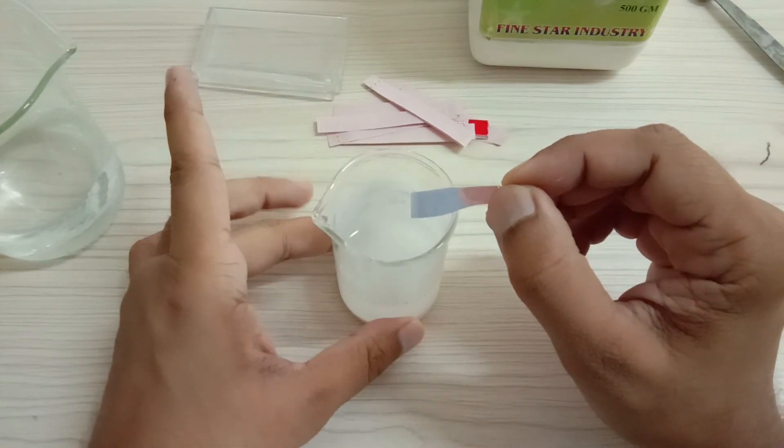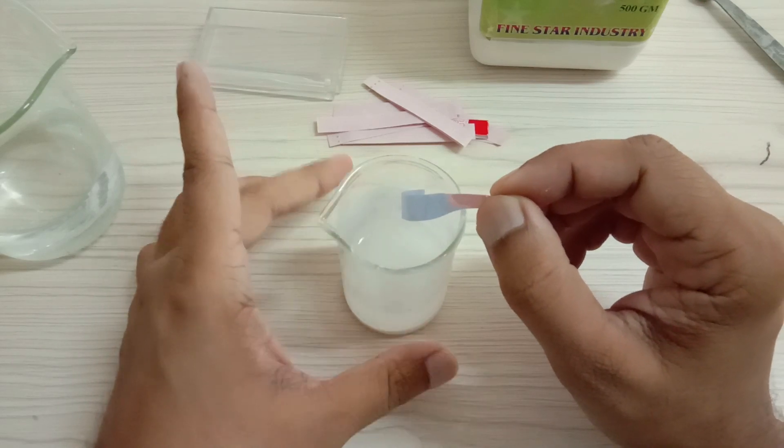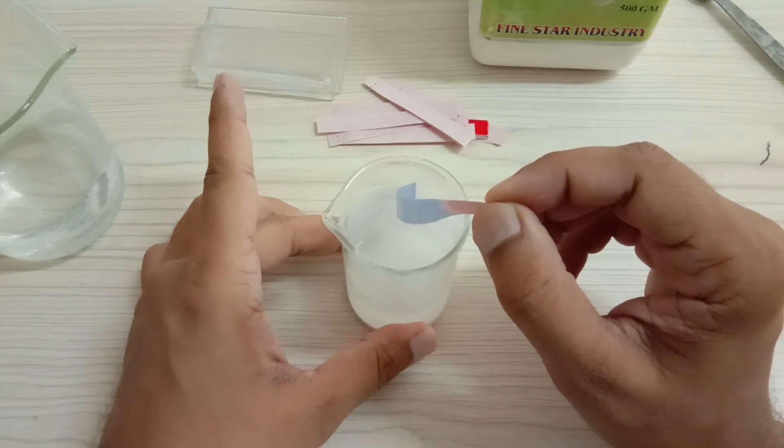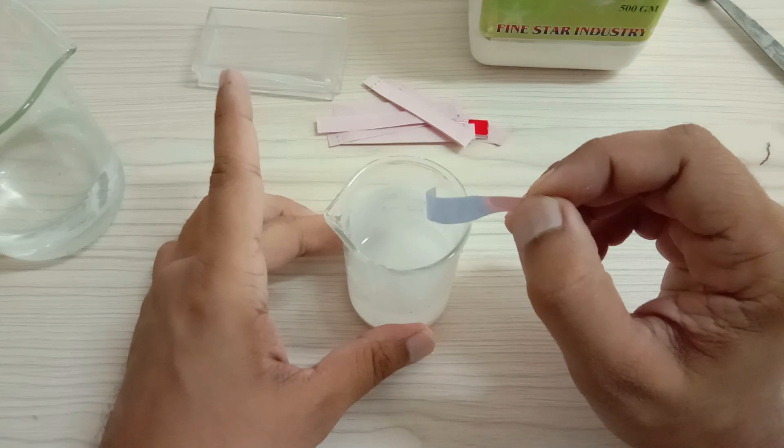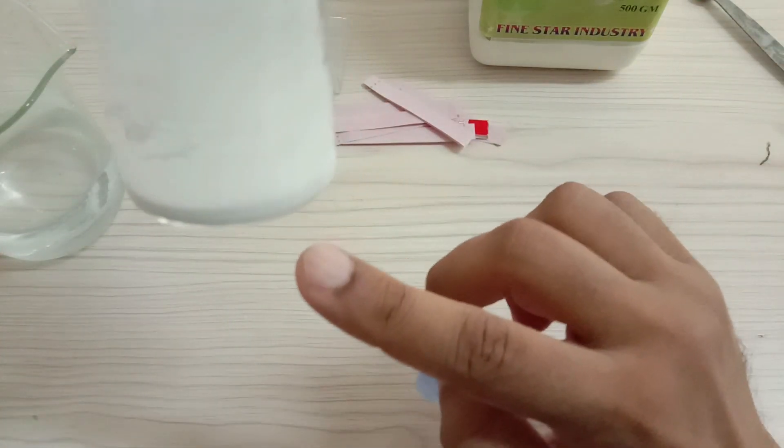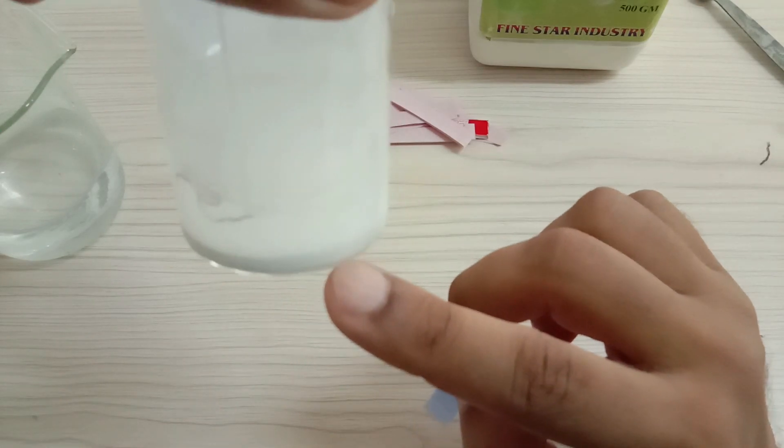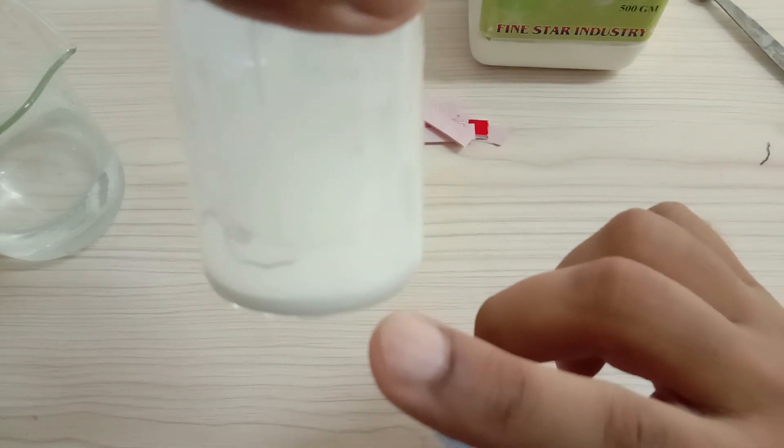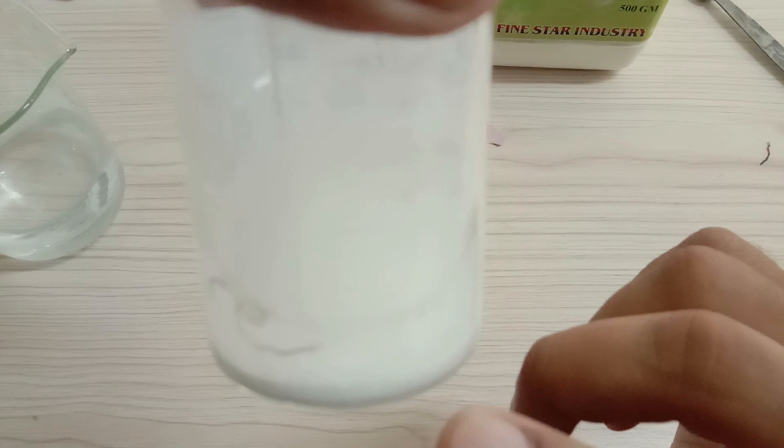Now I am hardly able to feel the warmth over here, but yes, there is some amount of heat being evolved, but not that much. And guys, you can see that most of the salt has settled at the bottom because calcium oxide is not fully soluble in water. You can check by yourself.